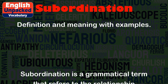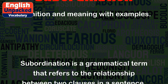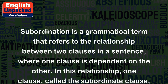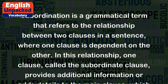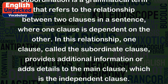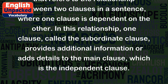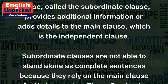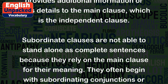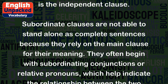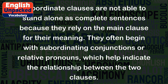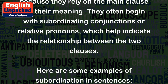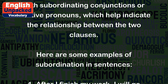Subordination is a grammatical term that refers to the relationship between two clauses in a sentence, where one clause is dependent on the other. In this relationship, one clause, called the subordinate clause, provides additional information or adds details to the main clause, which is the independent clause. Subordinate clauses are not able to stand alone as complete sentences because they rely on the main clause for their meaning. They often begin with subordinating conjunctions or relative pronouns, which help indicate the relationship between the two clauses.